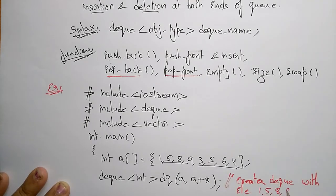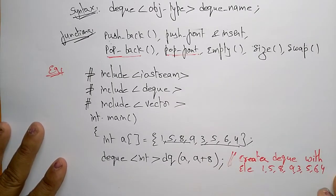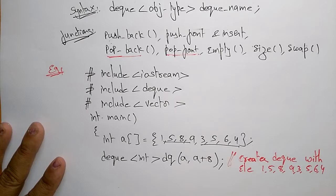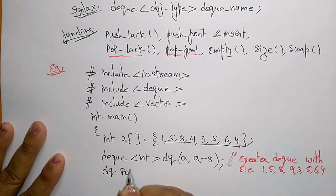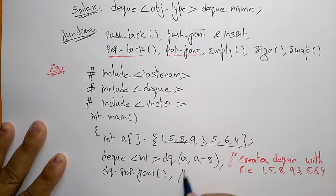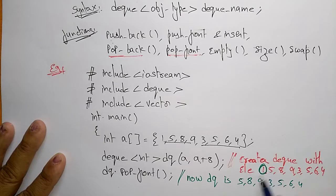This creates a deque containing the elements 1, 5, 8, 9, 3, 5, 6, 4. Now we call dq.pop_front(), which removes the front element. So the first element — 1 — is popped and the result is printed on the screen.